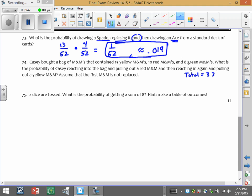What's the probability of reaching in the bag, pulling out a red, and then reaching in again and pulling out a yellow, assuming the first M&M is not replaced? So we want the probability of red and yellow. So the probability of a red, there were 10 of those out of the 33. The fact that we are not replacing it means that we are down to 32 overall M&Ms, and 15 of those are yellow.